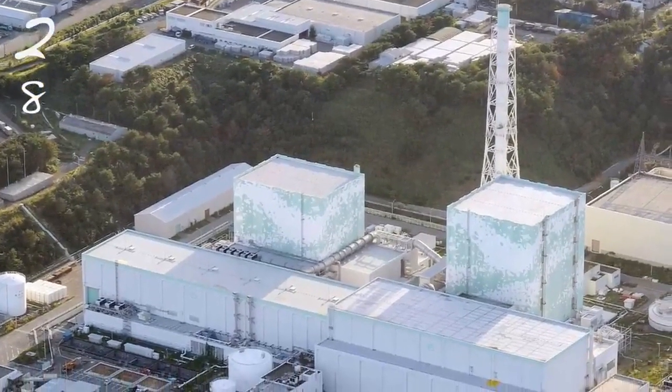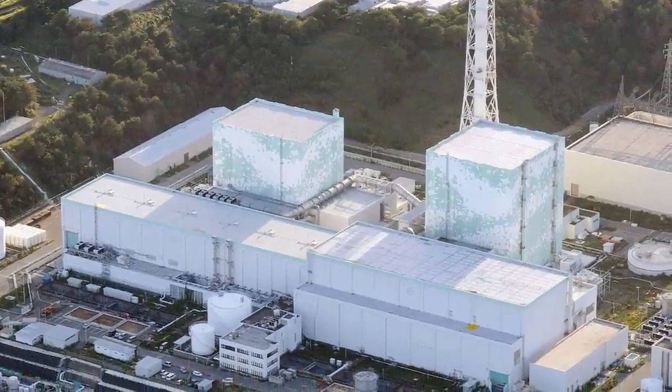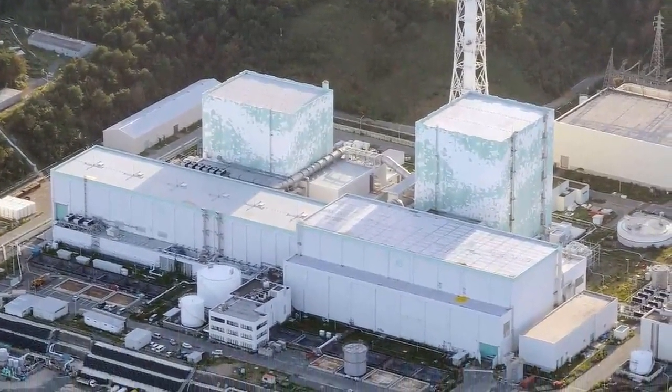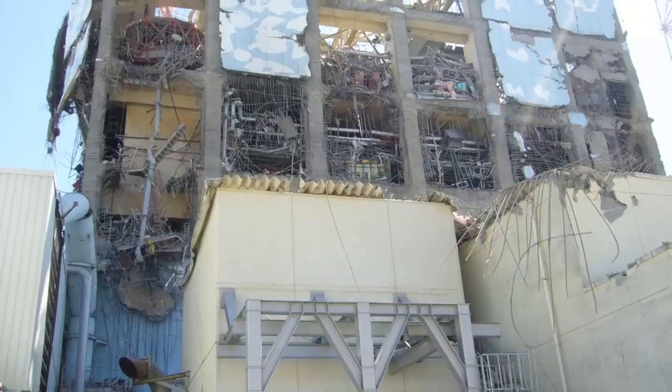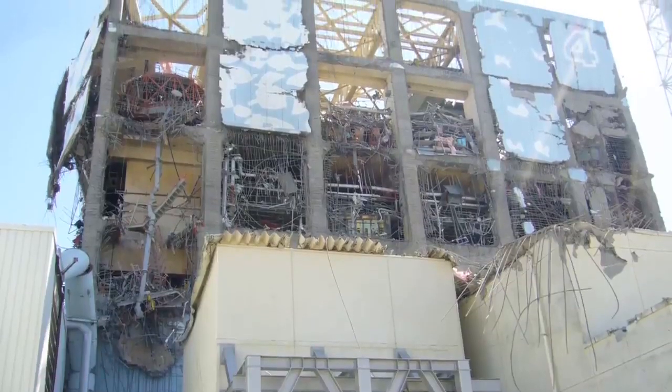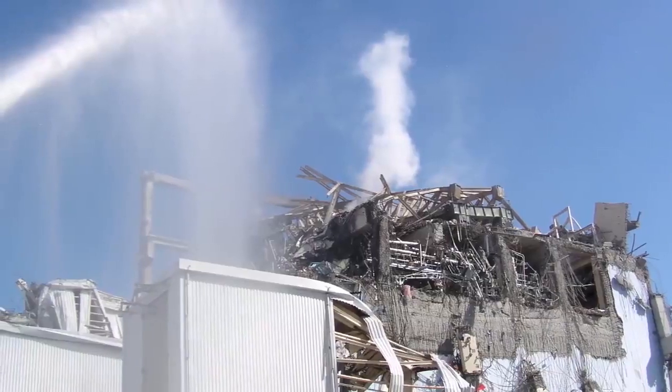Unit 5 was the first to be put into cold shutdown mode at 14.30 on the 20th of March 2011. This was followed by unit 6 at 19.27 on the same day. However the remaining units had a long journey ahead as a more stable situation was achieved in April 2012.